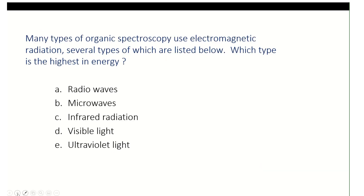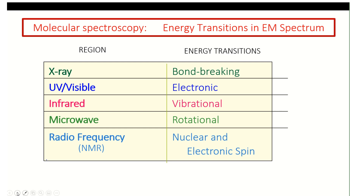We can ask simple questions such as which region is highest in energy, or rank these energies. Looking at the regions and energy transitions: ultraviolet corresponds to electronic transitions, infrared to vibrational, and radio to nuclear and electronic spin. Mass spec is absent from here because it's not a true spectroscopic technique — we'll look at that later.